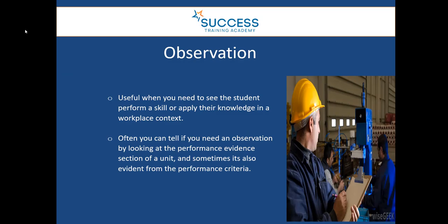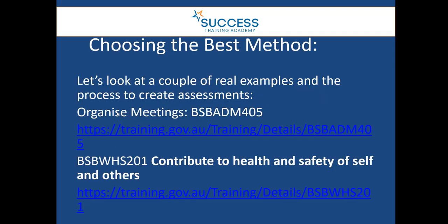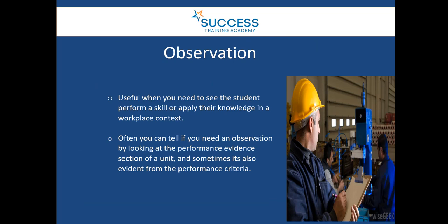Let's go into a little more detail about when you would use each method. Observation is very useful when you need to see the student perform a skill or apply their knowledge in a workplace context. You can often tell if you need an observation by looking at the performance evidence section of a unit and sometimes from the performance criteria. You must observe the skills of the unit — how you observe them is context-dependent and can be done in a simulated environment or within the workplace, with considerations for distractions, resources, equipment, and creating the right conditions.